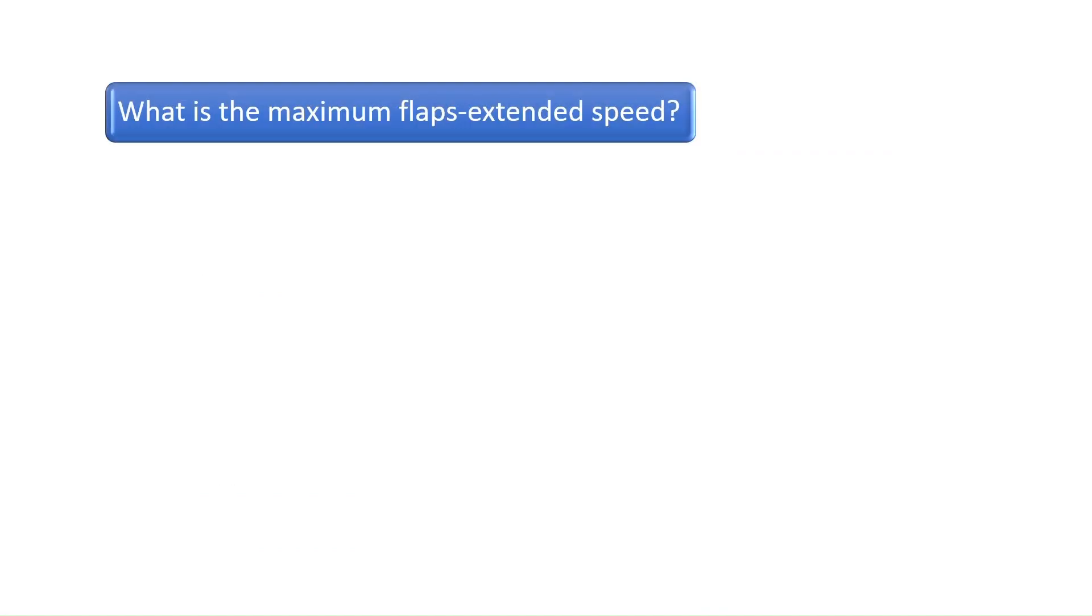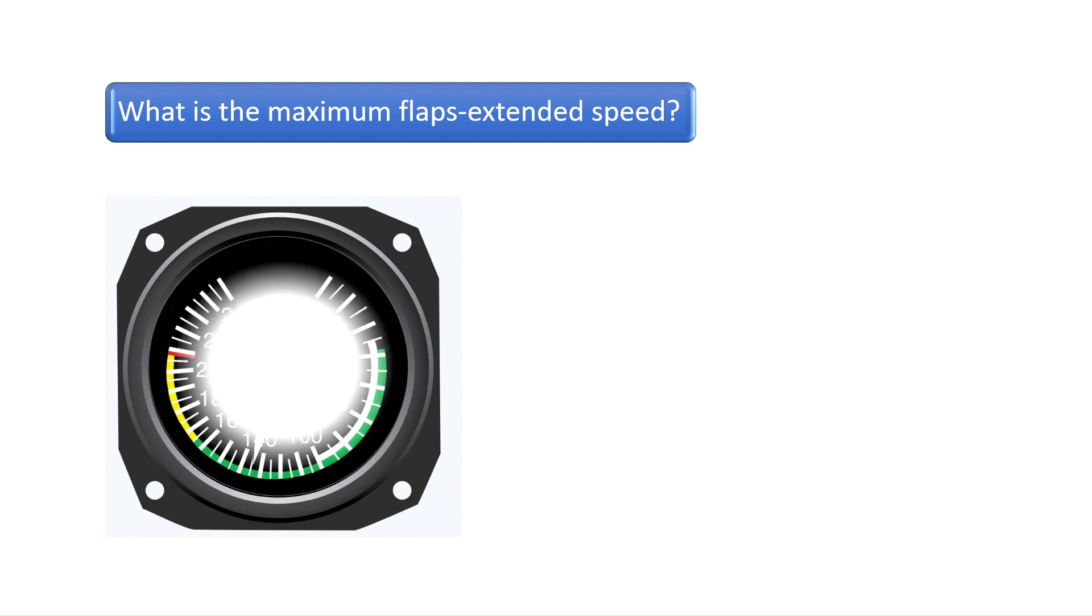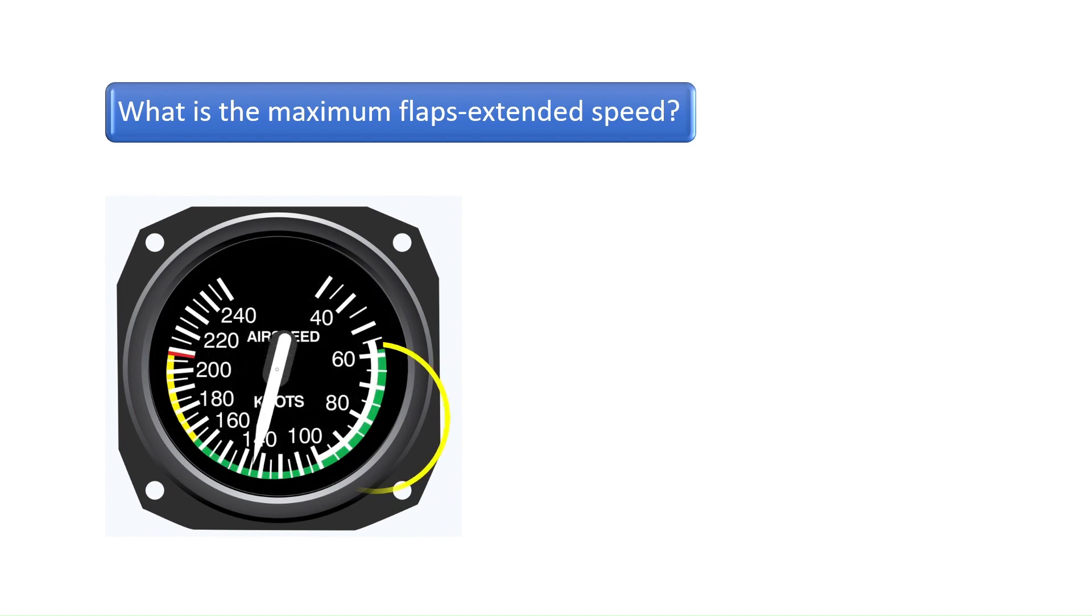Question 2. What is the maximum flaps extended speed? The white arc on the airspeed indicator is the allowable airspeed range with flaps extended. As you can see, the max airspeed with flaps extended is 100 knots. The correct answer is A.